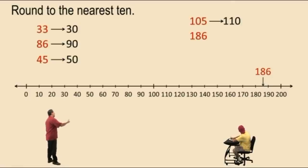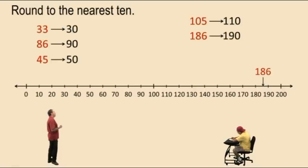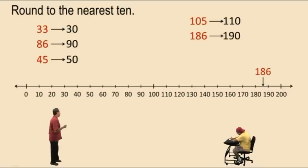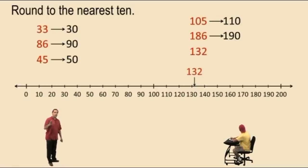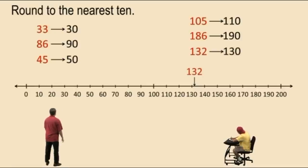186 is in between 180 and 190, but it's closer to 190, so 186 rounds to 190. 132 is in between 130 and 140 but it's closer to 130. Remember, we're rounding to nearest tens, so 132 rounds to 130.